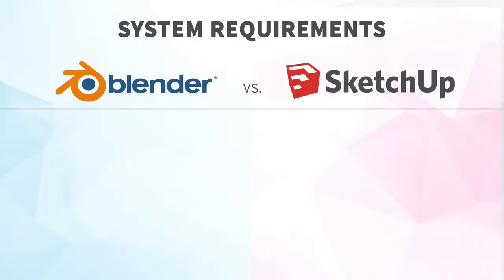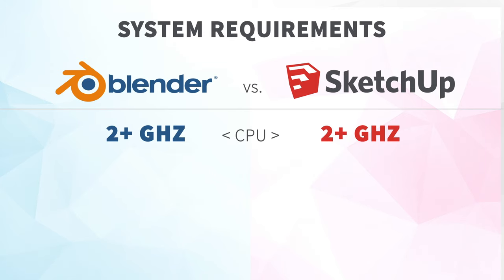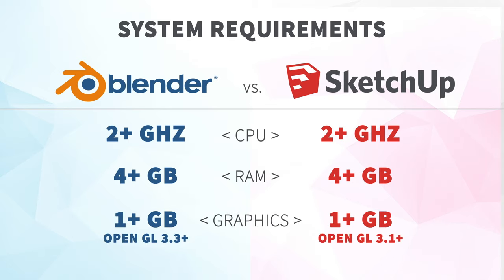For both Blender and SketchUp the minimum computer requirements are pretty similar — at least a 2 GHz CPU, at least 4 GB of RAM, and a graphics card with at least 1 GB of RAM that is OpenGL 3.3 compatible. So right off the bat, Blender is free and SketchUp is $299 a year — but that's not the whole story, because there's another investment you'll need to make to get up and running.